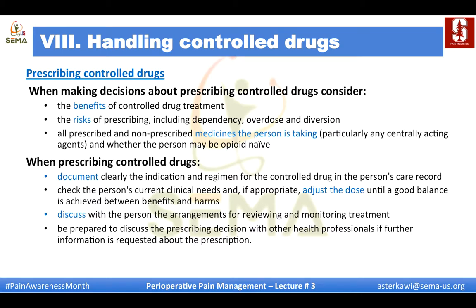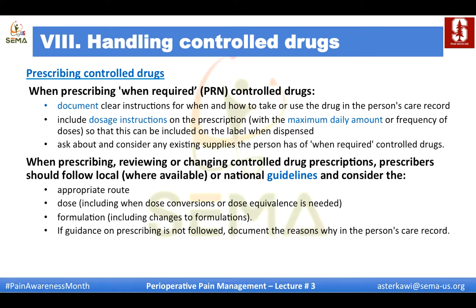When making decisions about prescribing controlled drugs, consider the benefit of controlled drug treatment, the risks of prescribing — including dependency, overdose, and diversion — and all prescribed and non-prescribed medicines the patient is taking. When prescribing, document clearly the indication and regimen in the person's care record, check current clinical needs, adjust the dose to achieve a good balance between benefit and harm, and discuss arrangements for reviewing and monitoring treatment.